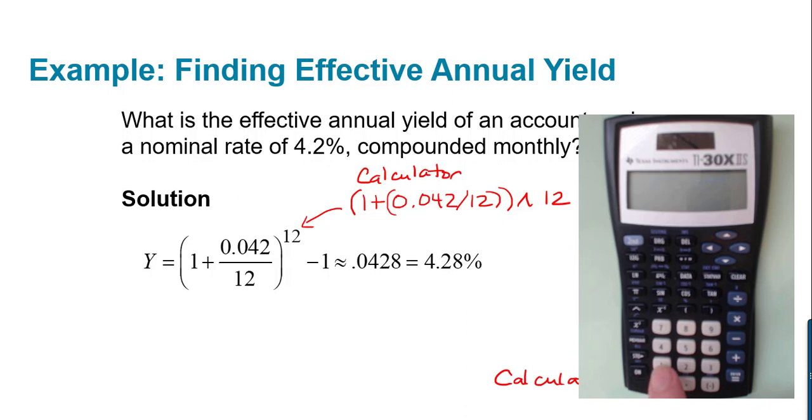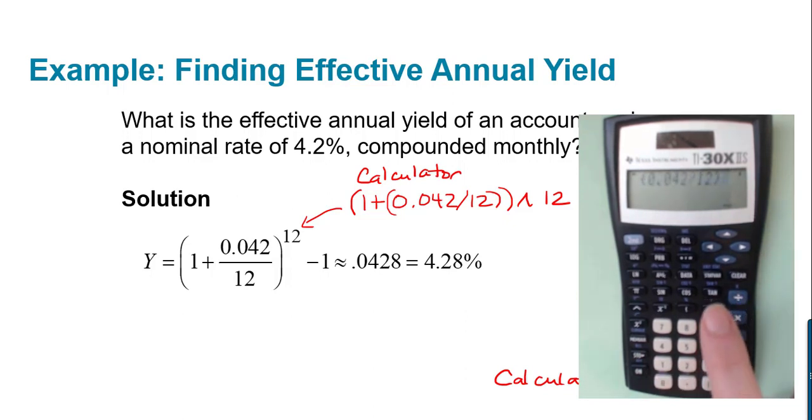So let's go ahead and do that on the calculator. We have 1, oh excuse me, gotta turn it on, and clear it out. And we have parenthesis 1 plus, parenthesis 0.042, divided by 12, close parenthesis, close parenthesis, and then raise it to, using that power key, the 12th power, enter. And you can see it turns out to be 1.042818007. And we rounded off to four decimal places so that it's the percentage to two, so when you put it in percent form it has two decimal places.